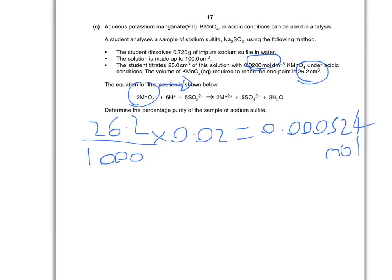So I'm going to divide by 2 and times it by 5. And my ratio gets me 0.00131 moles. It's important to keep track of what we're figuring out. So we now know we've got 0.00131 moles of sodium sulphite in our titration.